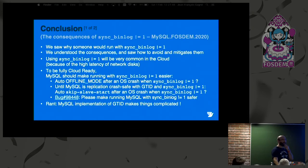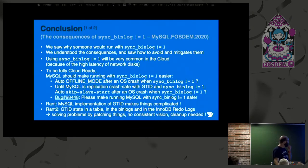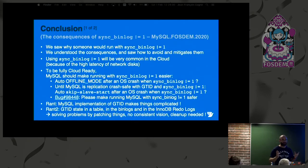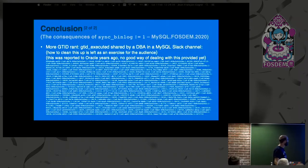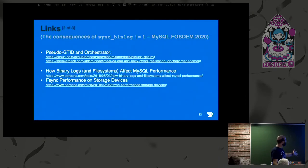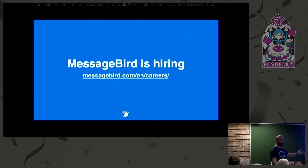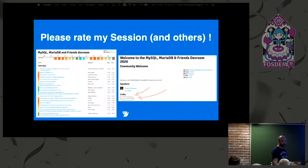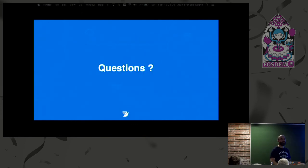I have three rants about my favorite feature: GTID makes things very complicated. There's a GTID state in the table, a GTID state in the binary logs, and now a GTID state in InnoDB — not in the redo log. There's cleanup to do here. The GTID state display is just horrible; we need a way to clean that, like splitting it into multiple lines. My slides have links for further reading, and my employer is hiring.